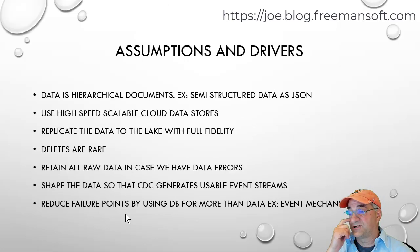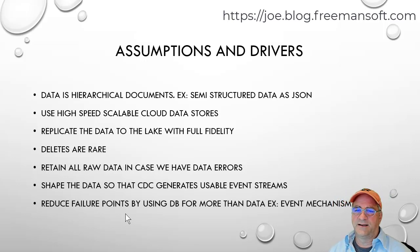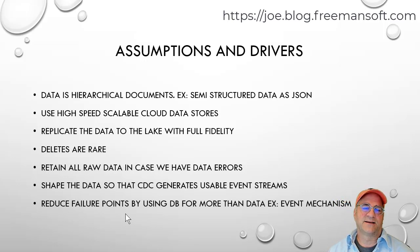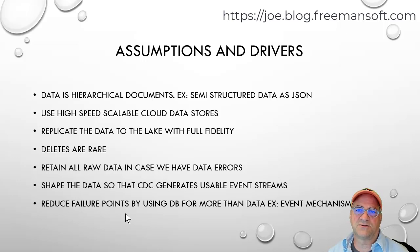I'm going to talk about assumptions and drivers. I'm going to assume we have some moderately complicated data that it's not just a row. If it's a row, go right at it — use Cassandra or something else. But if you have some hierarchical document, then we might have some kind of complex data. In my case, this is going to be semi-structured data — basically JSON.